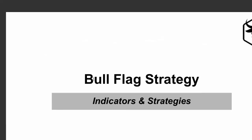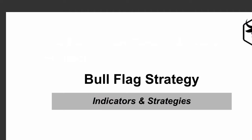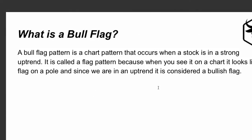Let's jump into it. We're going to be talking about the bull flag strategy. If you guys are listening to it on the course, this is going to be in the indicators and strategies lectures. So what is a bull flag? A bull flag is a chart pattern that occurs when a stock is in a strong upward trend. It's called a flag pattern because when you see it on a chart, it looks like a flag on a pole, and since we're in an uptrend, it's considered a bullish flag.